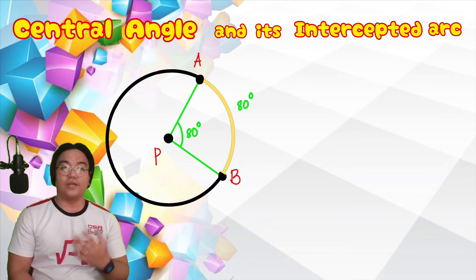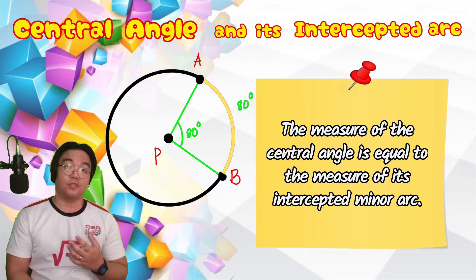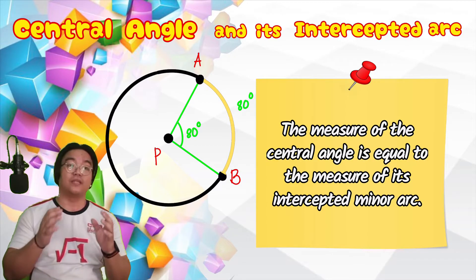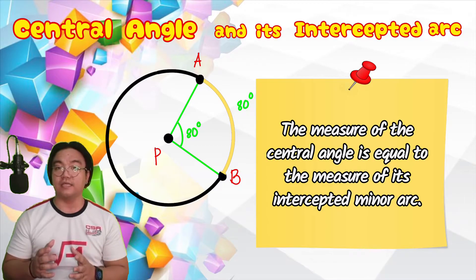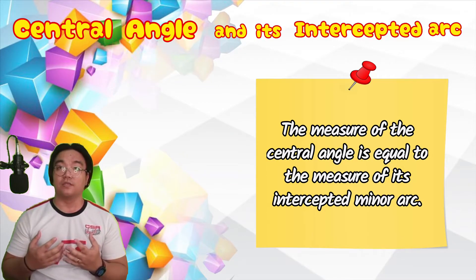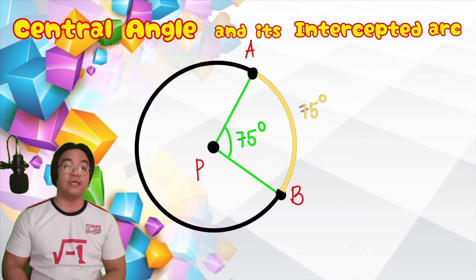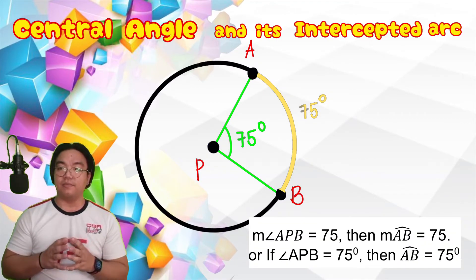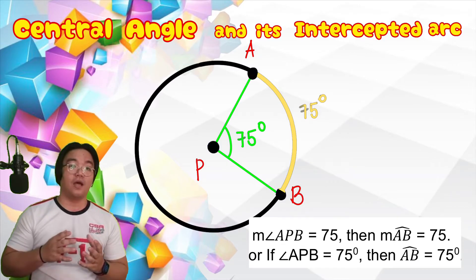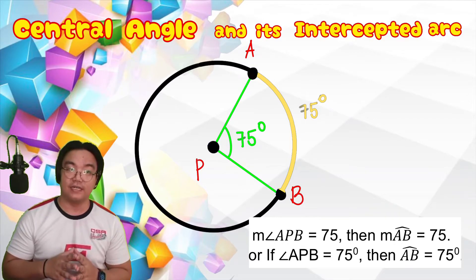When it comes to the central angle, getting the measure of an intercepted arc is very easy, because whatever the measure of the central angle is, it is equal to the measure of its intercepted arc. For example, in the given circle P, since angle APB is 75 degrees, then its intercepted arc AB is also 75 degrees.